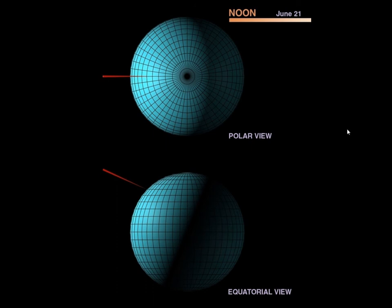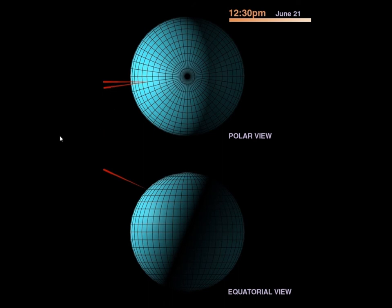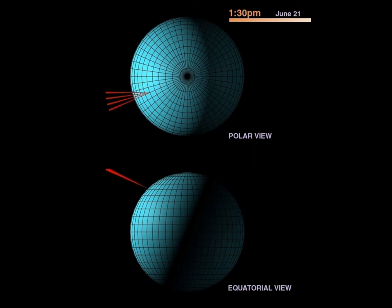The Earth rotates one twenty-fourth of the way around every hour, since there are 24 hours in a day. That works out to 360 degrees per day, or 15 degrees per hour, or 7.5 degrees per half hour. Every half hour, the Earth rotates 7.5 degrees, and the observer places a new needle indicating the new direction of the sun. The previous needles rotate along with the Earth. This process continues, with each half-hour rotation adding another needle to the collection.